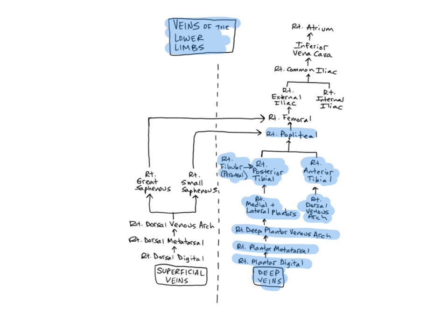The popliteal veins, located in the posterior knee, are formed by the union of the anterior and posterior tibial veins. The popliteals come to an end when they pass to the front of the knee and become femoral veins. The popliteals drain the knee joint and skin, and the muscles and bones around the knee joint.